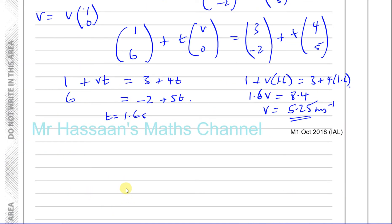Because we know T is 1.6 seconds — found from the j components — substituting that value of T gives us V equals 5.25 metres per second.